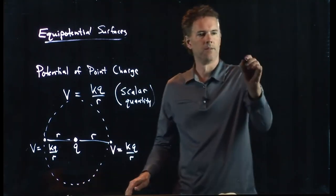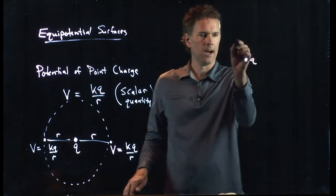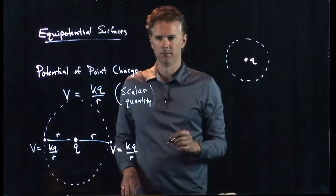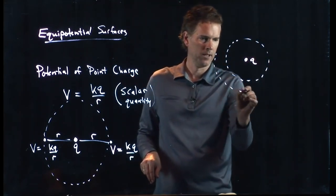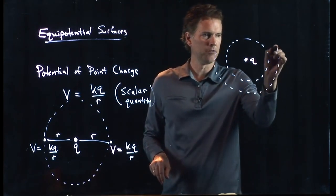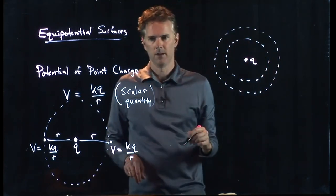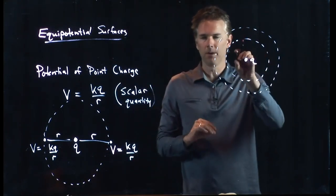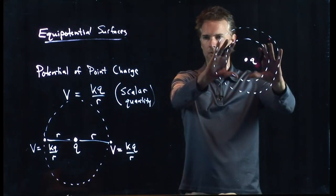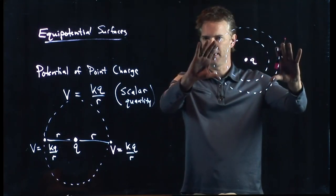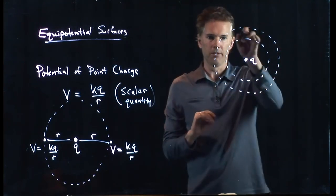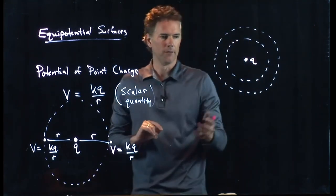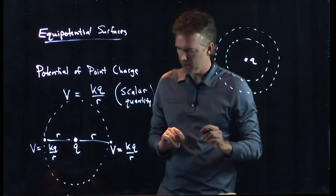So for a point charge Q, I have an equipotential surface like that. And I can draw another one if I like. It's going to have a different value, but it is certainly equal all the way around. And this is like your topological map. If Q was the mountaintop, this would be the next elevation step down, this would be the next elevation step down from there, and so forth. But if you walk around along that dashed line, you're always at the same elevation. If you walk around these dashed lines, you're always at the same potential.